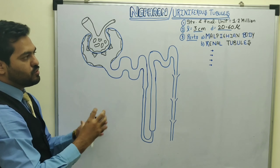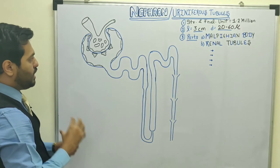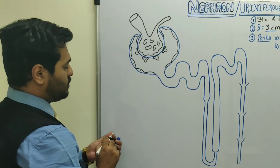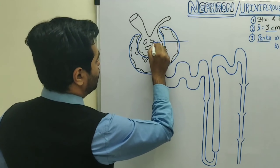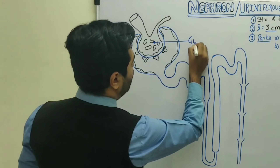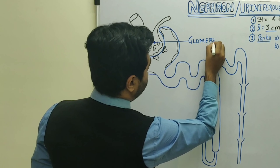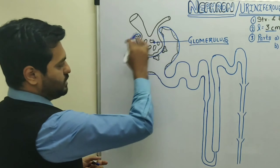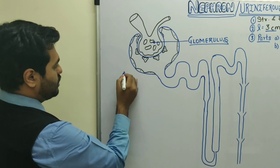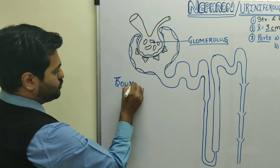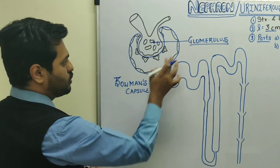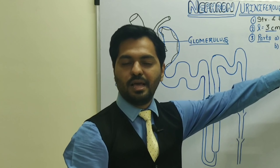The Malpighian body is made up of two major components. One component is this network — or tuft — of capillaries, which we call the glomerulus. These are the glomerular capillaries. The cup-shaped structure present around them is known as Bowman's capsule. So Bowman's capsule and glomerulus together form the first part, which is the Malpighian body.